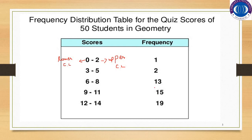There are 15 students in the class with marks between 9 and 11. We usually denote frequency with small f. If you sum: 1 plus 2 plus 13 plus 15 plus 19, the summation of f will be 50, as there are 50 students in the class.